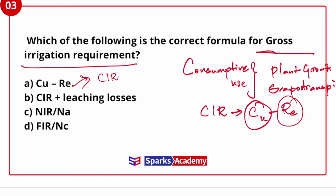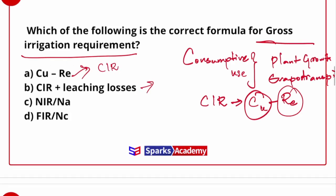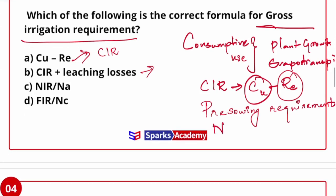The first option is the value of CIR. Now, for the net irrigation requirement, we also consider leaching losses, pre-sowing requirement — the water needed before the plant is ready — and nursery water requirement, which is external water supply when it is dry. So net irrigation requirement equals CIR plus pre-sowing requirement plus nursery water requirement plus leaching losses.